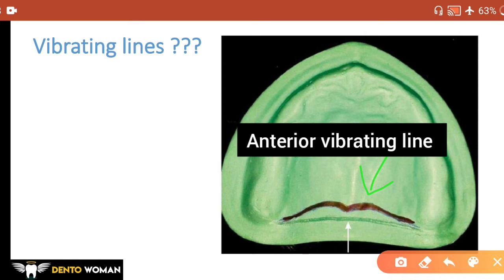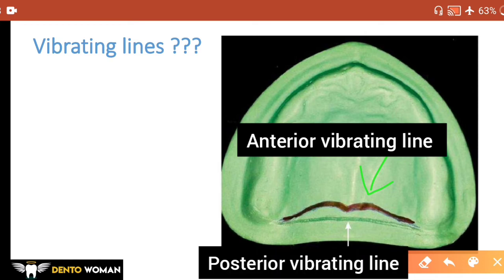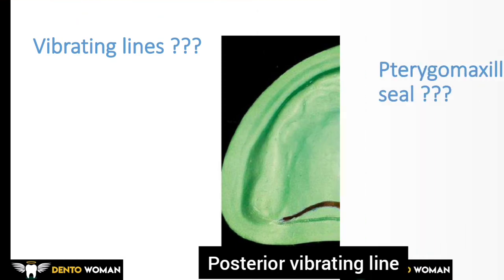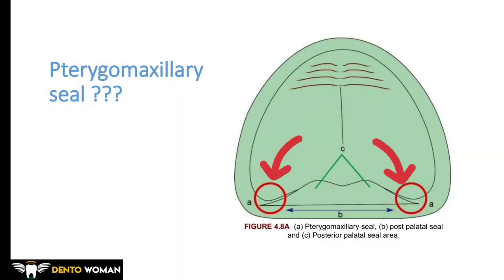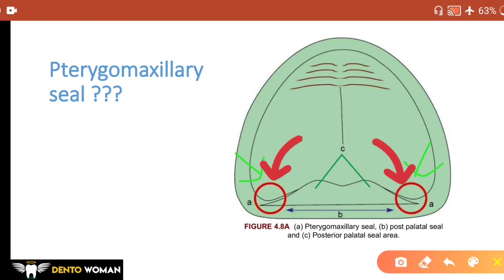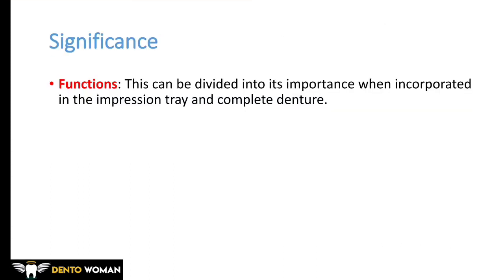The posterior vibrating line is at the junction of the aponeurosis of the tensor veli palatini muscle and the musculature of the soft palate. To record it, you ask the patient to say 'ah' in short bursts but in an un-exaggerated manner. The pterygomaxillary seal extends through the hamular notch for three to four millimeters anterolaterally, approximating the mucogingival junction.